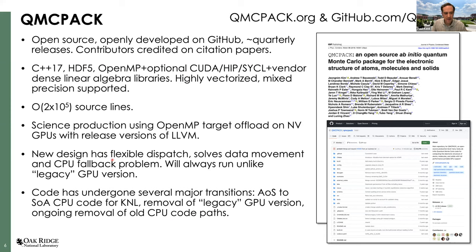Our new design has flexible dispatch, and very importantly it solves the data movement problem — so if you don't have a GPU, you can run on CPUs, and if there's new functionality not yet implemented for GPUs, the code will still run on CPUs with data in the right place. Some of you familiar with QMCPack will know we've been running on GPUs for about a decade. The old legacy GPU implementation had a problem: if you tried to use functionality that hadn't been ported, the code would just stop — not user-friendly. That's something we've had to solve.